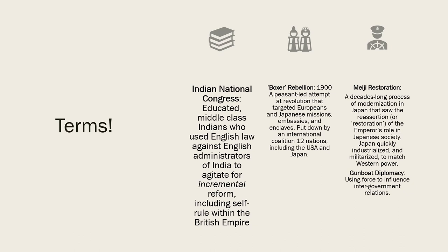The second term is the Boxer Rebellion of 1900 — an attempt by peasants to overthrow not only a corrupt, ineffectual government but also to oust Europeans and the Japanese, whom they saw as invading and taking over China and destroying their way of life.